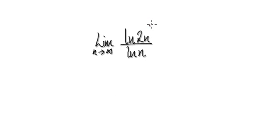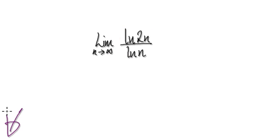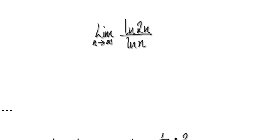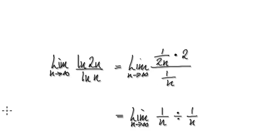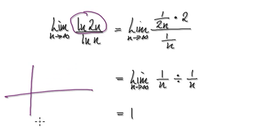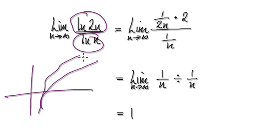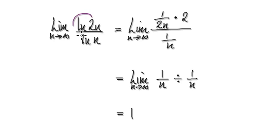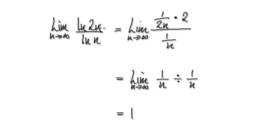Next: find the limit of this sequence as n tends to infinity. Press pause and have a go. There are two ways of doing this. One way: log of 2n keeps on climbing, and log of n keeps on climbing as well, so they're both heading towards infinity. You've got infinity over infinity, which is an indeterminate form, which means you can apply L'Hôpital's rule.